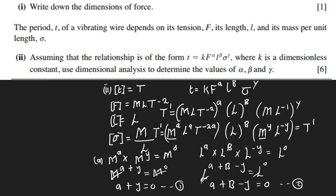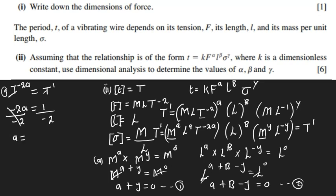For T: T to the power negative two a equals T to the power one. Those cancel, so negative two a equals one, meaning a equals negative one over two. Substituting into equation one: negative one over two plus y equals zero, so y equals positive one over two.